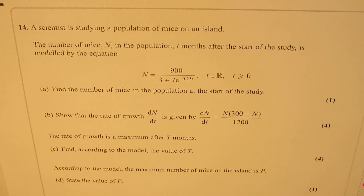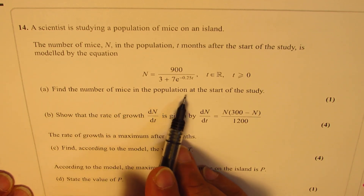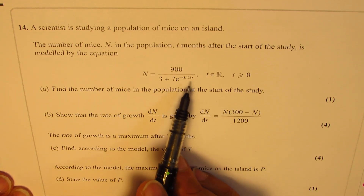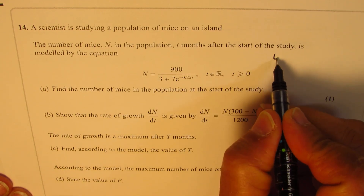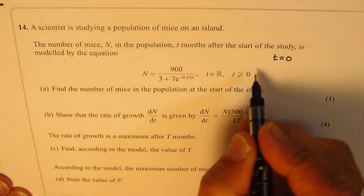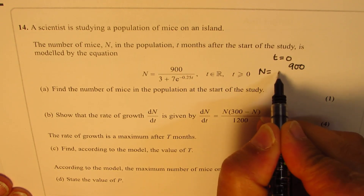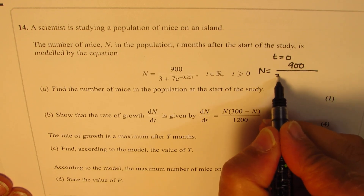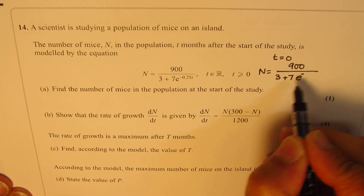I would like you to pause the video, answer this question, and then look into my solutions. Now, part one of this question is to find the number of mice in the population at the start of the study. That means when t equals 0. So we could substitute t equals 0 into the formula and find that answer. So we have n equals 900 over (3 plus 7e to the power of minus...).